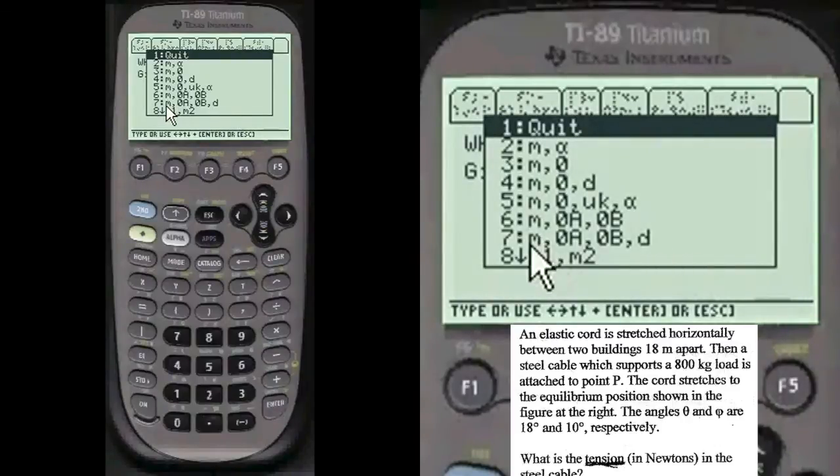And of course they give you in this problem mass and they give you the angles, two angles, and they give you the distance apart. So we're going to choose number seven.